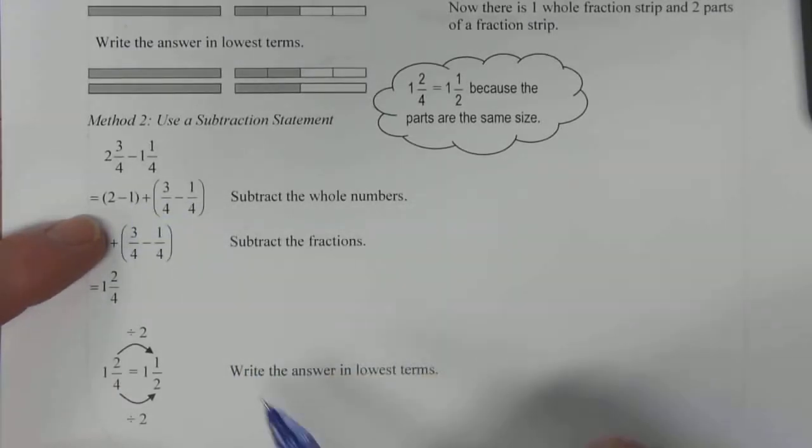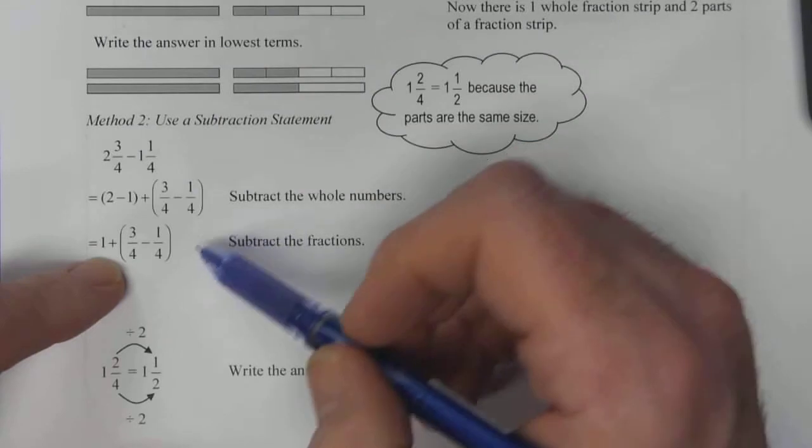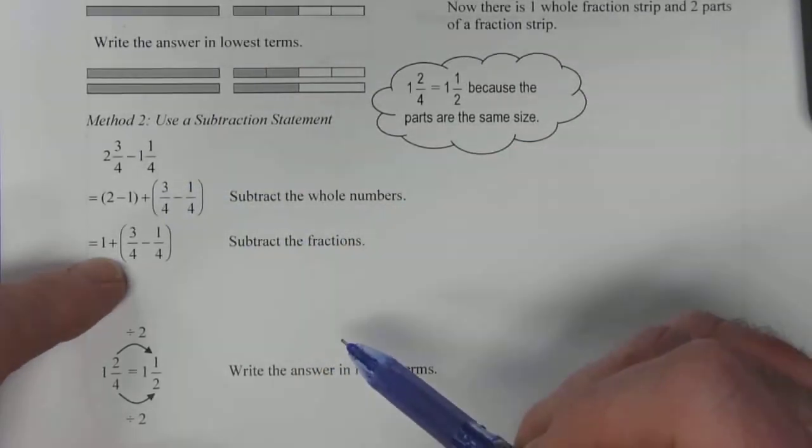So you can subtract the wholes. Two minus one is one like we did before. But then you can look at subtracting the fraction part separately as well. So three quarters minus one quarter.